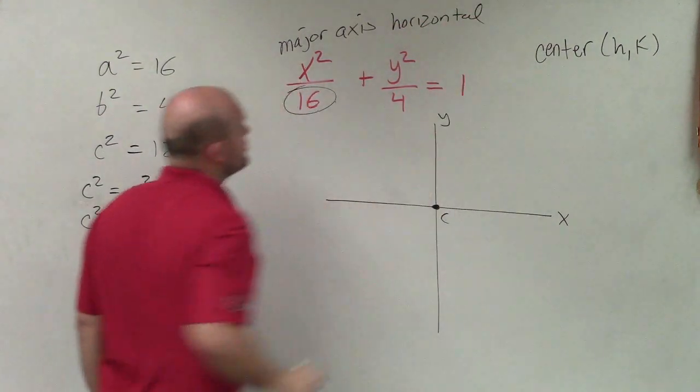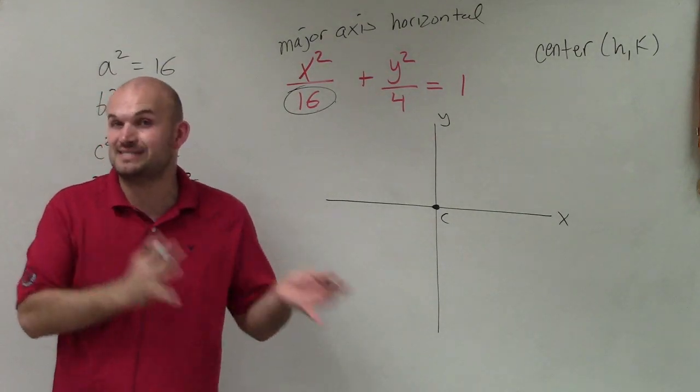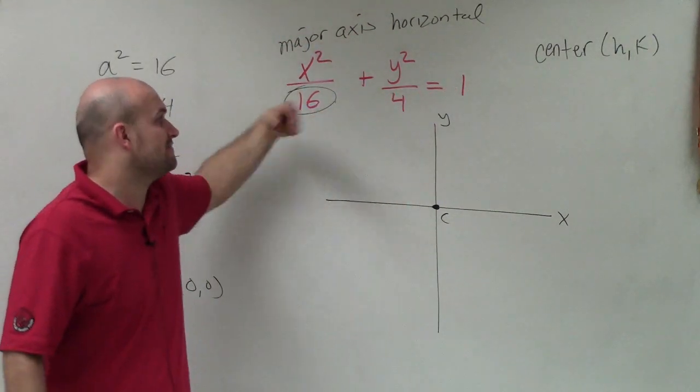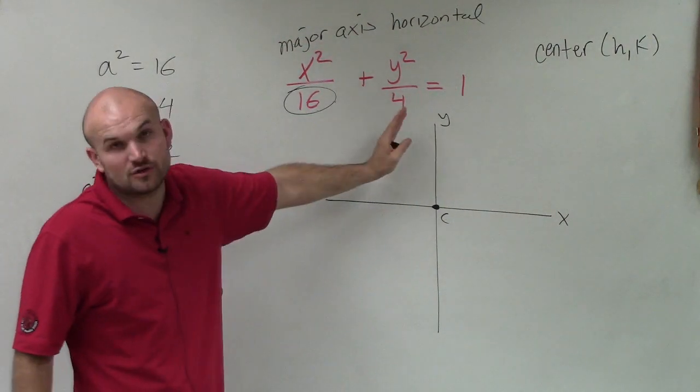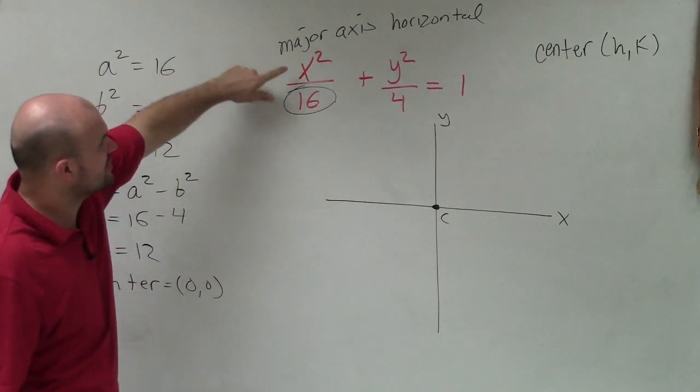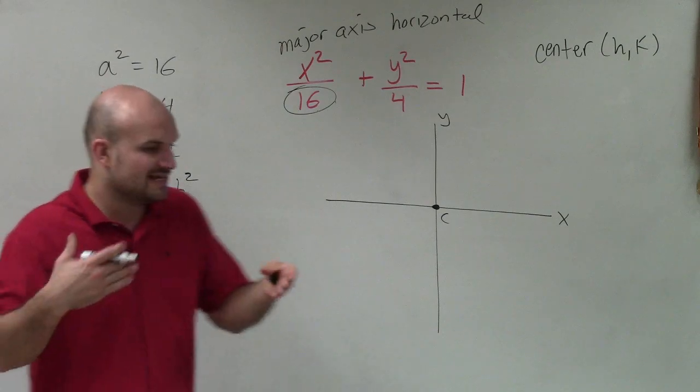So to determine your major axis, it's always going to be which variable your a is under. So if my a was under the x, my major axis is horizontal. If the larger number 16 was under the y, then my major axis would be vertical. So since it's under the x, I have a horizontal major axis.